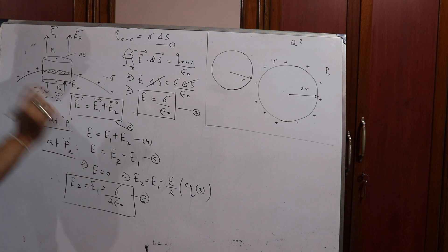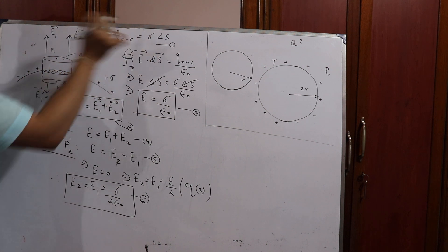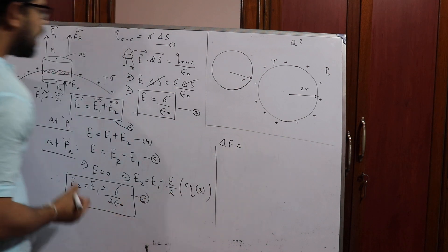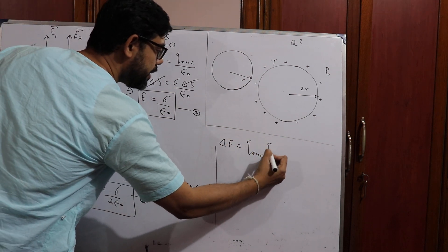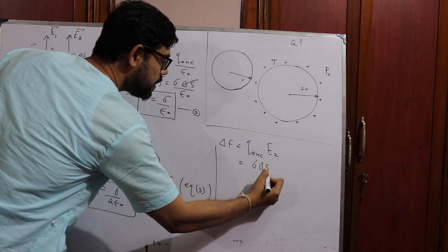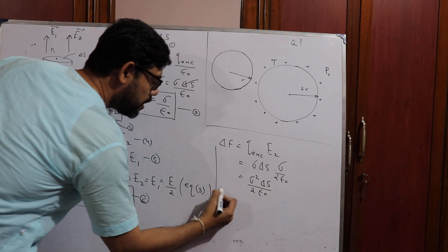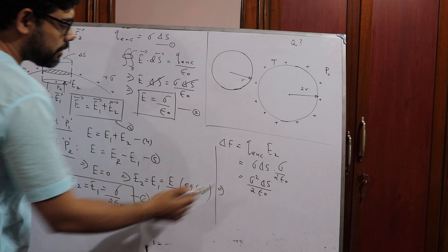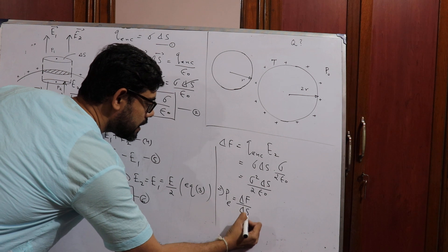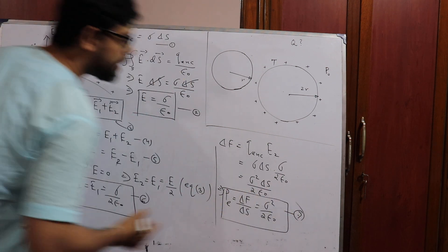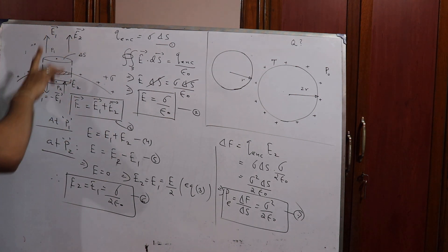This sheet of charge experiences an electrostatic force due to the electric field E2 from the remaining part of the conductor. The force is ΔF = Q_enclosed × E2 = σ·δS × σ/2ε₀ = σ²·δS / 2ε₀. From here we can find the electrostatic pressure — force per unit area: P_electrostatic = ΔF/δS = σ²/2ε₀. This is a very important concept of electrostatic pressure.